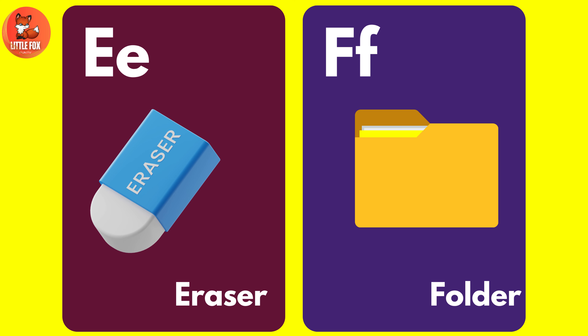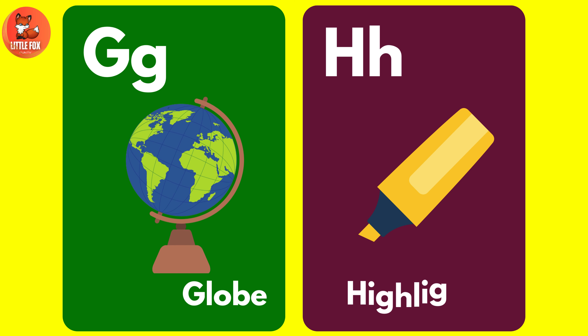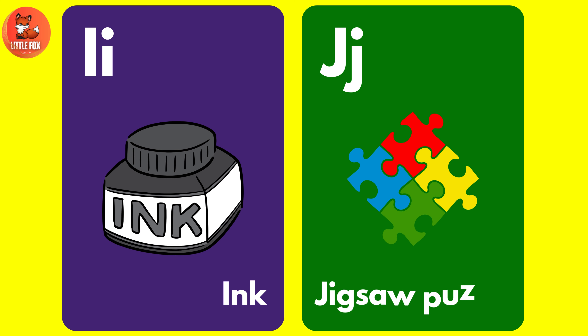F for Folder. G for Globe. H for Highlighter. I for Ink.